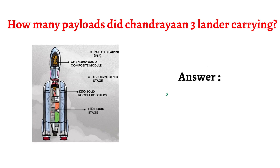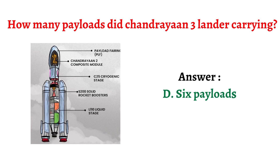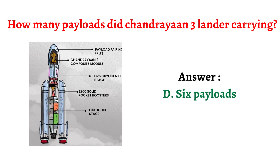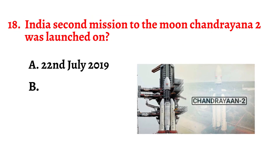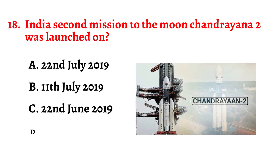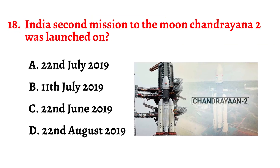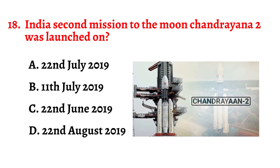Question number seventeen: How many payloads did the Chandrayaan 3 lander carry? The correct answer is option D: six payloads.